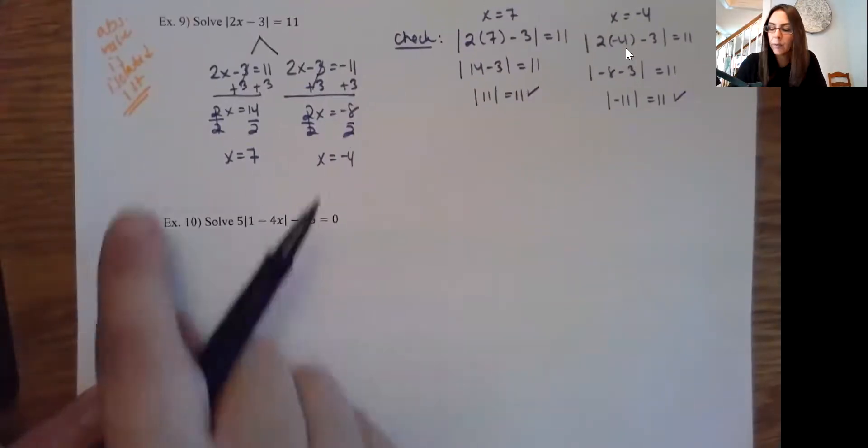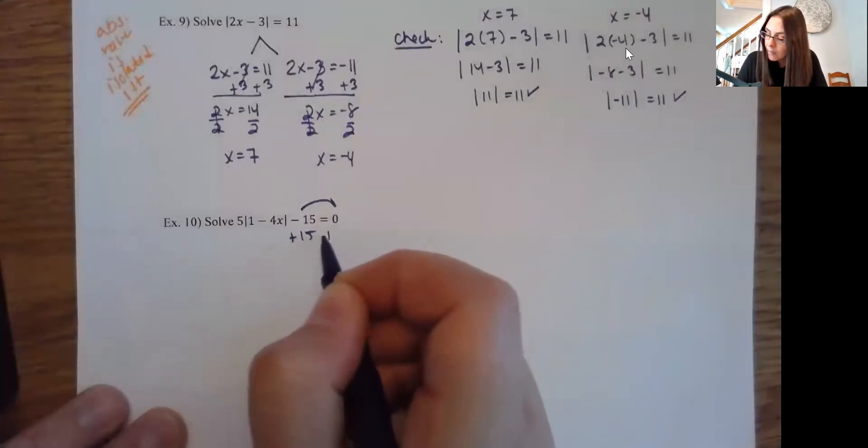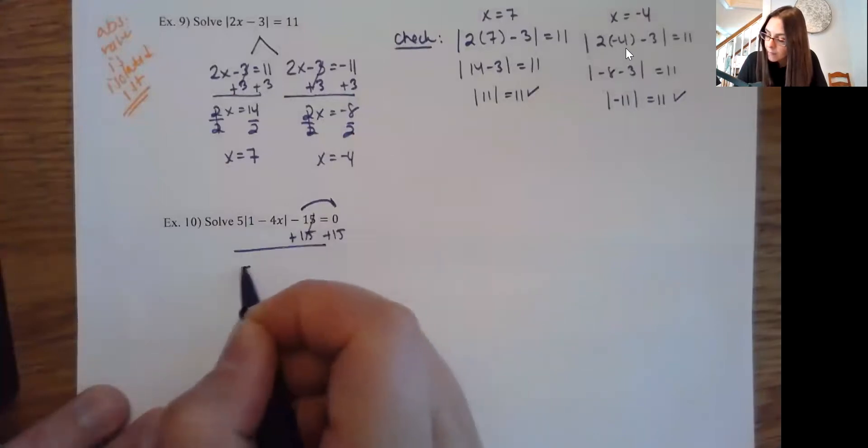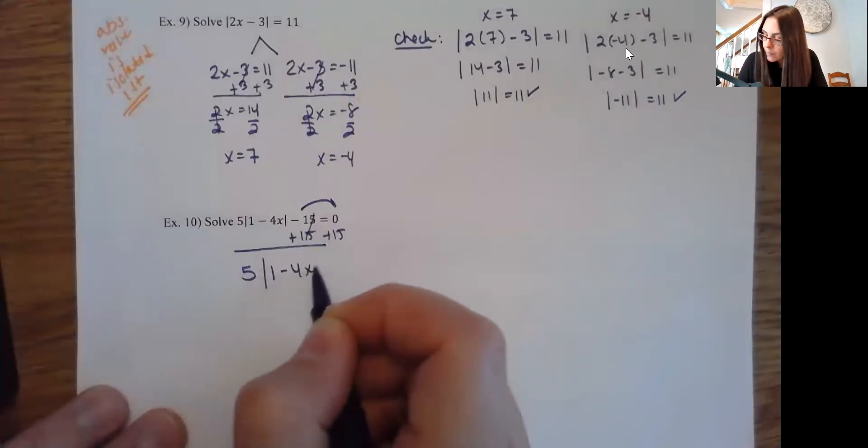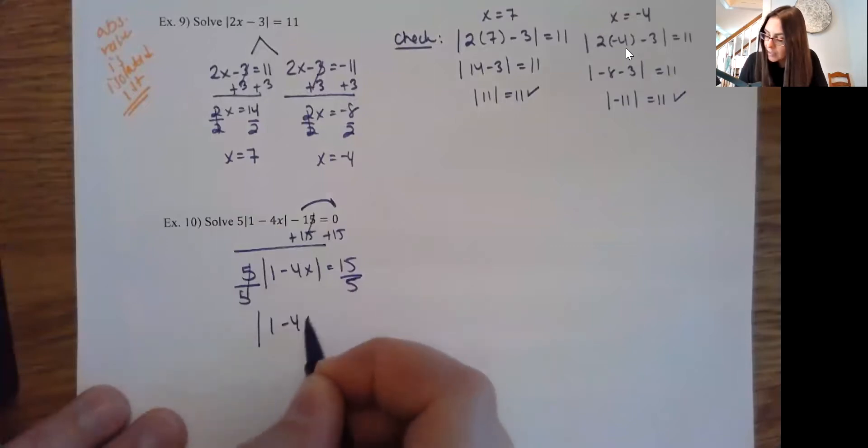Now, for example 10 here, you can't start until you isolate the absolute value first. So here we're going to bring the 15 to the other side. And then I'm going to go ahead and divide by 5. So I want to get that absolute value completely isolated first.